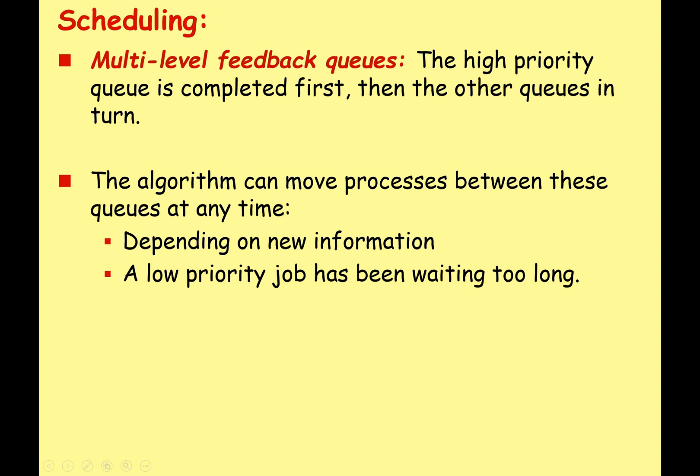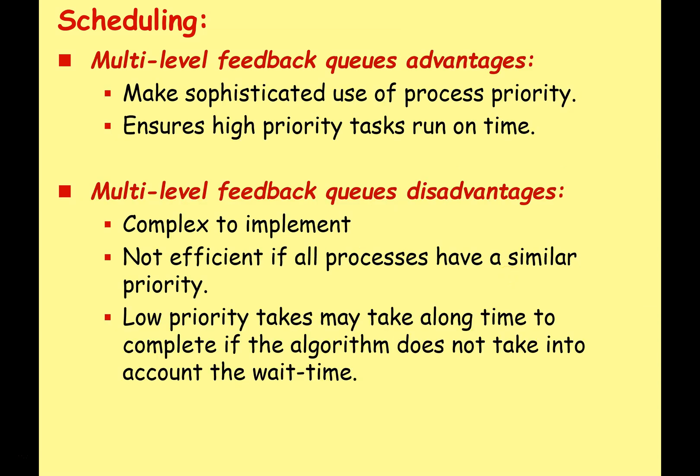The algorithm can move processes between queues at any time depending on new information, or if a low-priority job has been waiting too long its priority may be boosted by the scheduler so it gets completed in a reasonable amount of time. The advantage of multi-level feedback queues is that it makes much more sophisticated use of process priority and ensures high-priority tasks run on time.